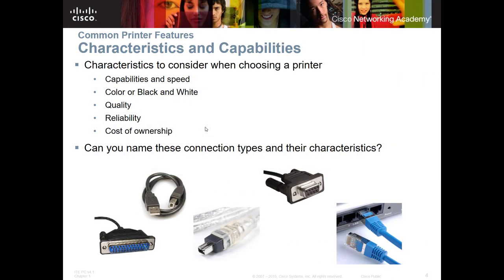Let's look at common printer features. All printers use paper or some type of printing mechanism — they're going to print on something. When you're looking at the different characteristics and capabilities of various printers, you want to consider several things. You don't want to go out and spend $5,000 to $10,000 on a high-end copier-printer-fax machine if you have a home office that only needs a small laser printer printing black and white at maybe 150 dots per inch. So you want to look at capabilities, speed, and color.